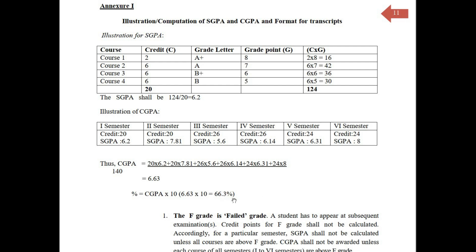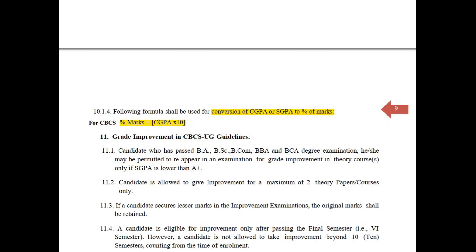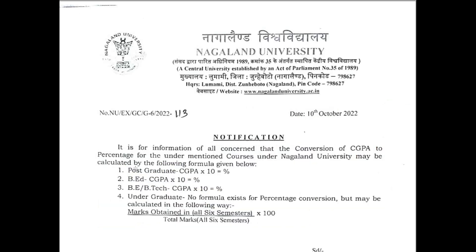Likewise, for students who come under CBCS, they will also follow the same formula: percentage marks = CGPA × 10. Whatever CGPA you have secured, multiply it by 10 and you will get your final percentage.